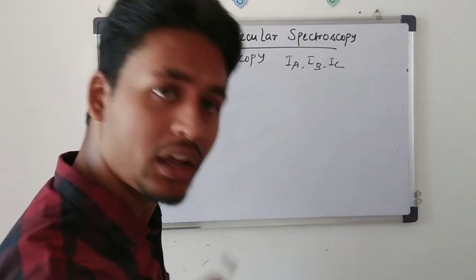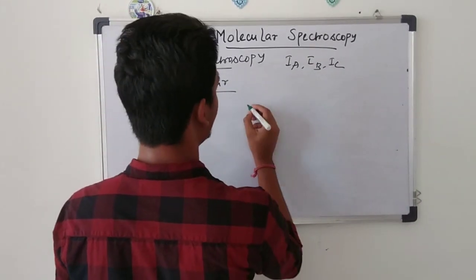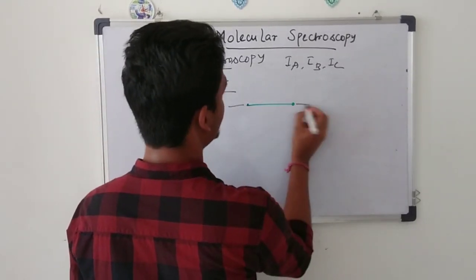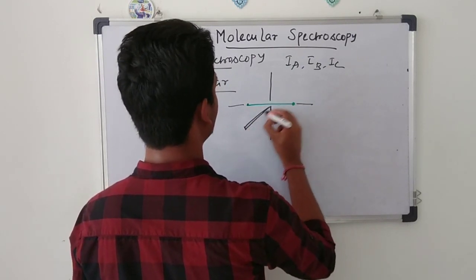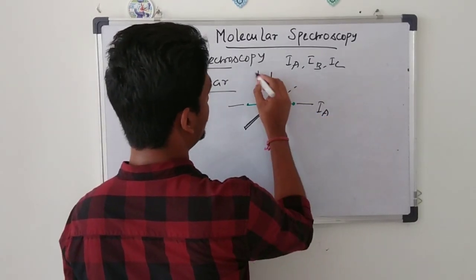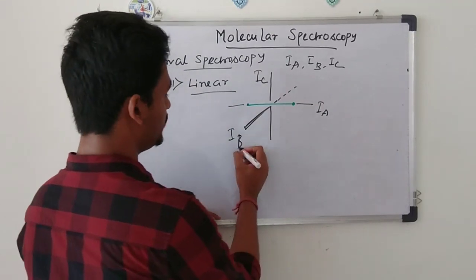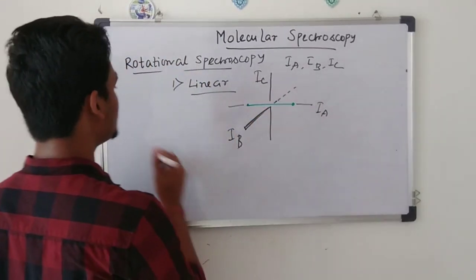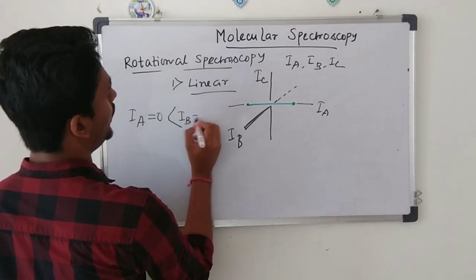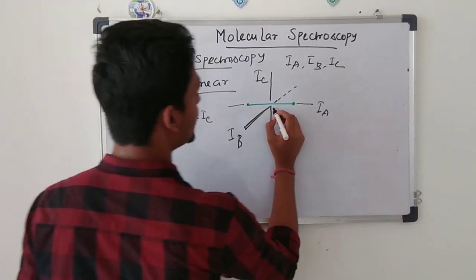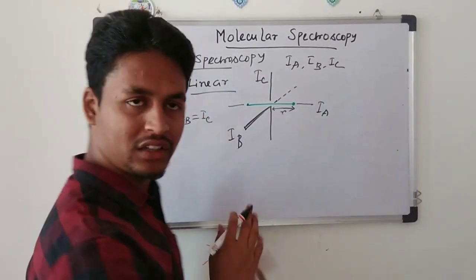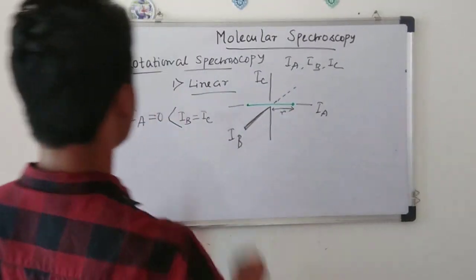For a linear molecule, one axis lies along the molecular bond. Since all atoms lie on that axis, r=0 for that axis, giving IA=0. The other two axes are perpendicular to the bond and give equal values: IB = IC > 0.